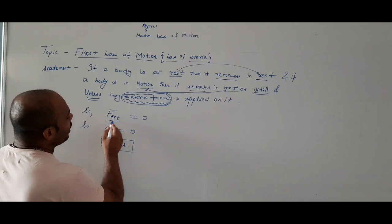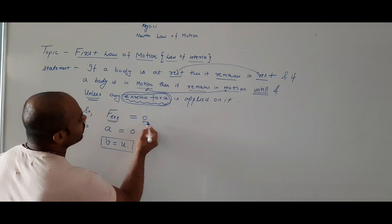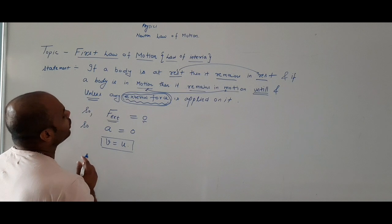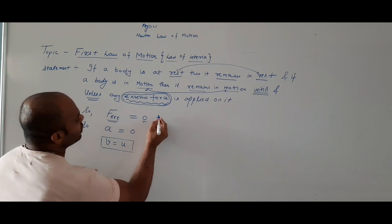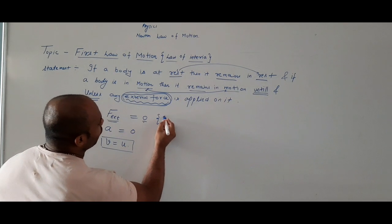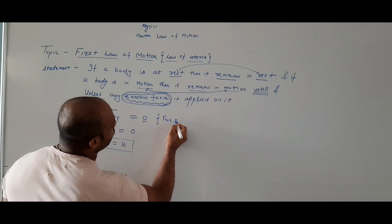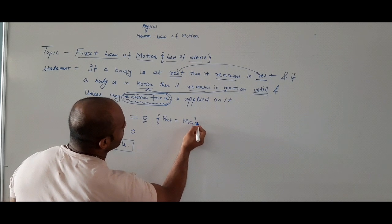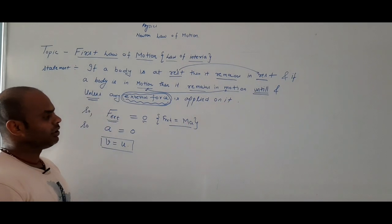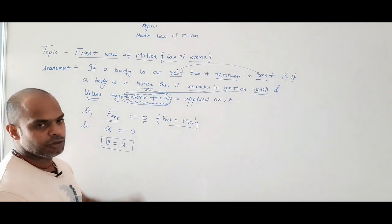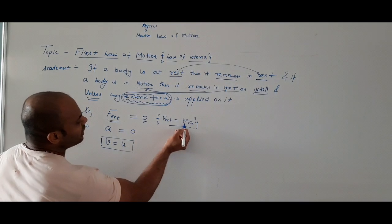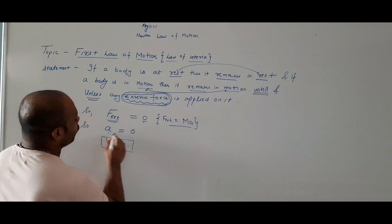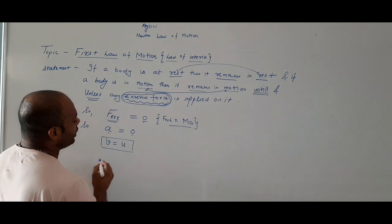F external ka matlab kya hota hai? Zero. F external zero hona chahiye. Agar F external zero hai, to F external actually hota hai mass into acceleration. Kyunki kisi cheez ka mass zero ho paana possible nahi hai, to acceleration zero hoga.